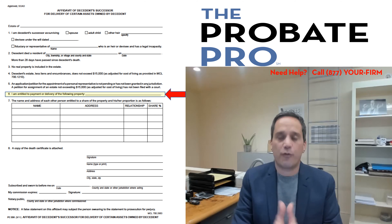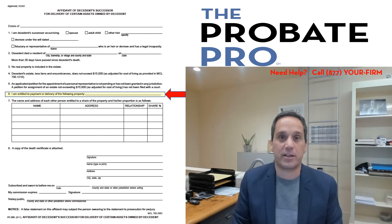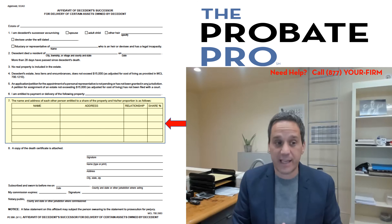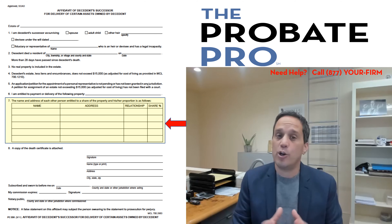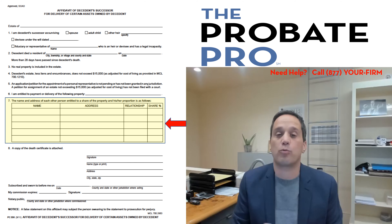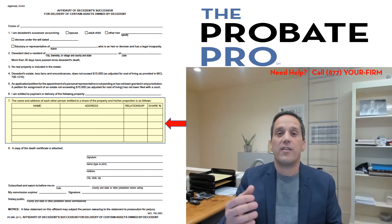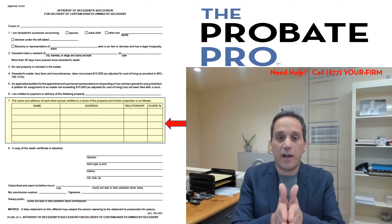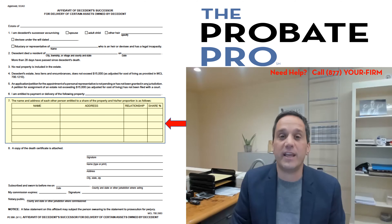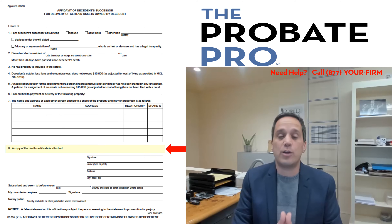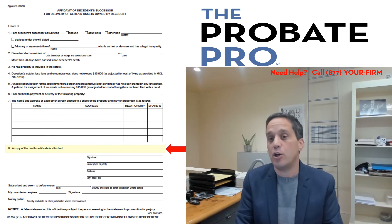For example, if there was a bank account that had twelve thousand dollars and you're using this form to gain access to twelve thousand dollars, that's what you'd write in that particular field. The next is an identification of the people who, under the statute, are entitled to share and their relative proportions. For example, if it's a spouse, the spouse would be listed at one hundred percent, but if there was no spouse and three children, the amount may identify a third, a third, a third for each of the three children. The next is that you have attached a copy of the death certificate to the form itself.